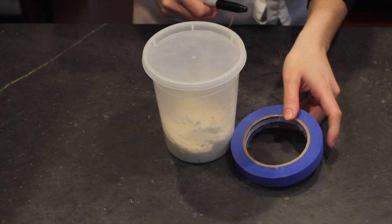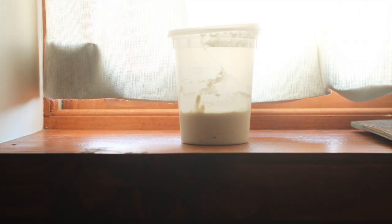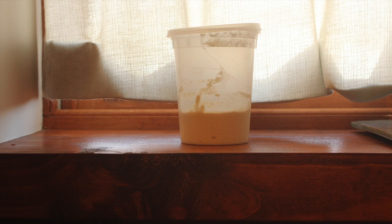We're also going to mark our container so we can keep better track of our little buddy's level of activity. You can use a sharpie, a rubber band, or a piece of tape to keep track of where our mix is starting so we can see the rise and fall. Now we wait. A lot.